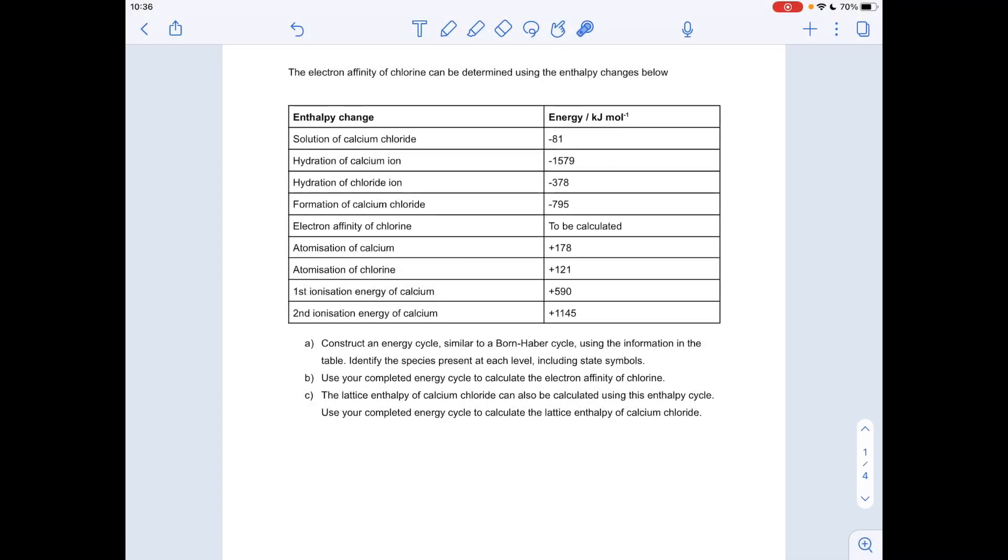Okay, so here we go then. So first thing I'm going to do is construct a Born-Haber cycle essentially using the information in the table. Identify the species present at each level including state symbol and then obviously we've got to do a calculation from that to calculate the electron affinity of chlorine.